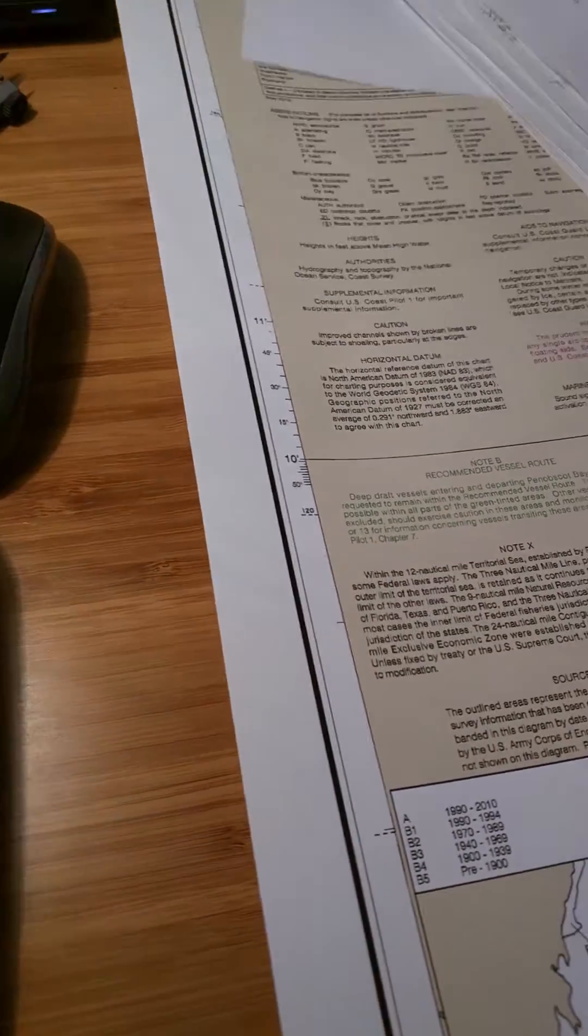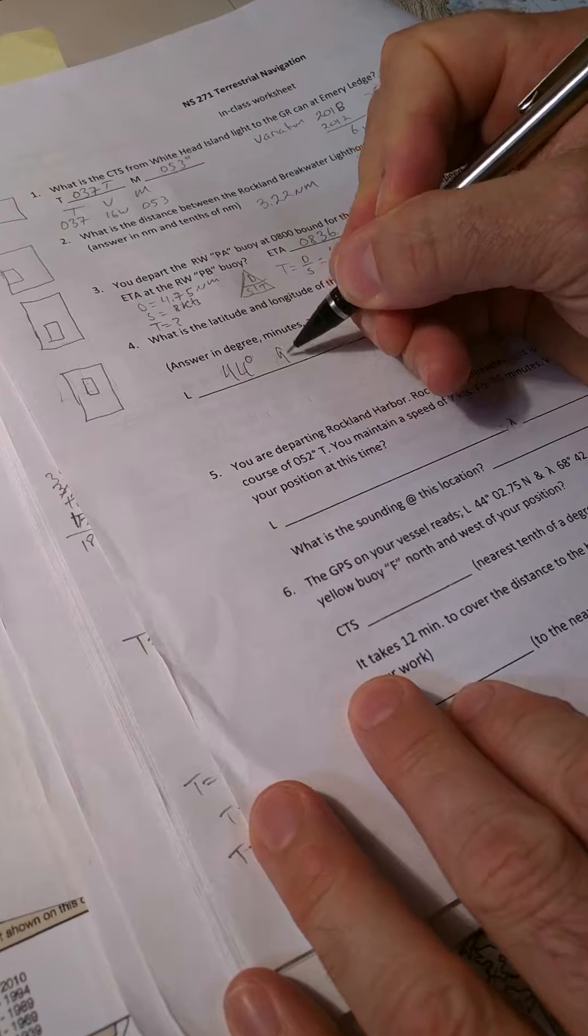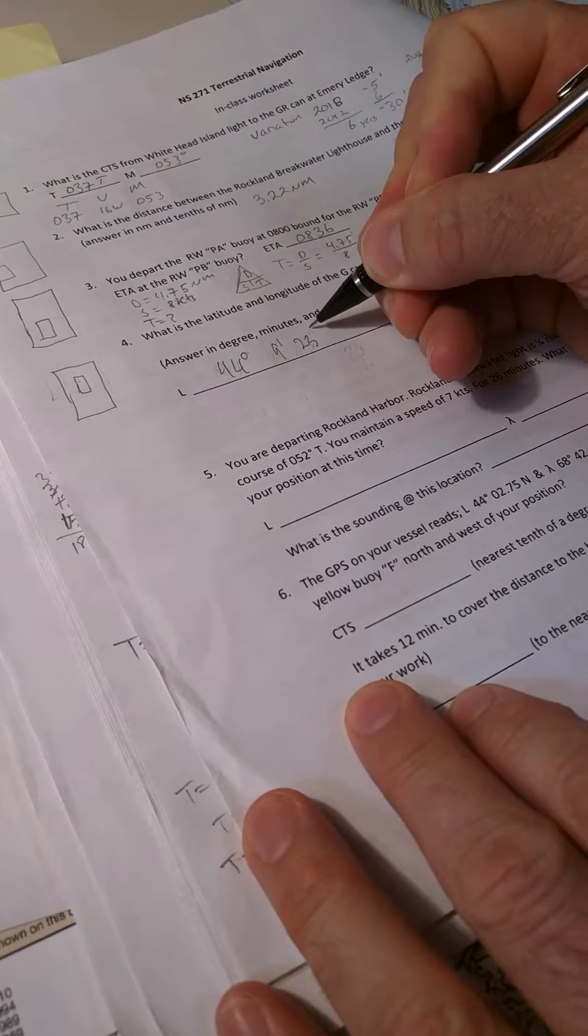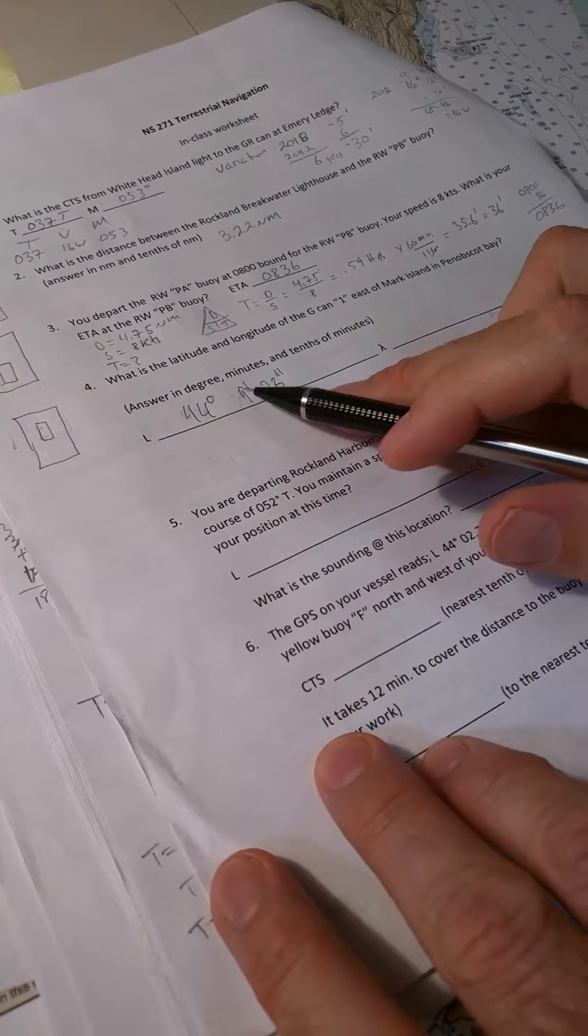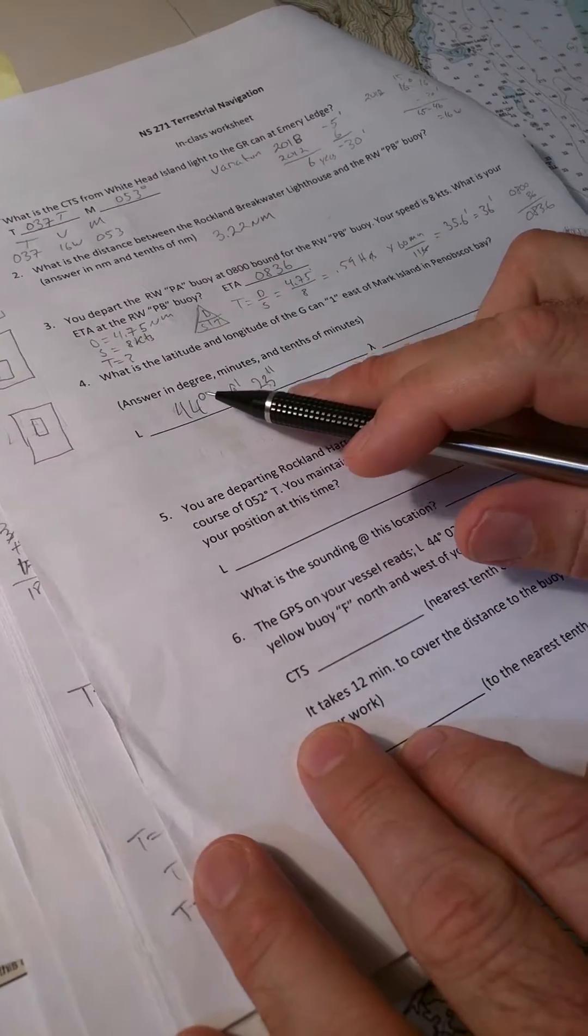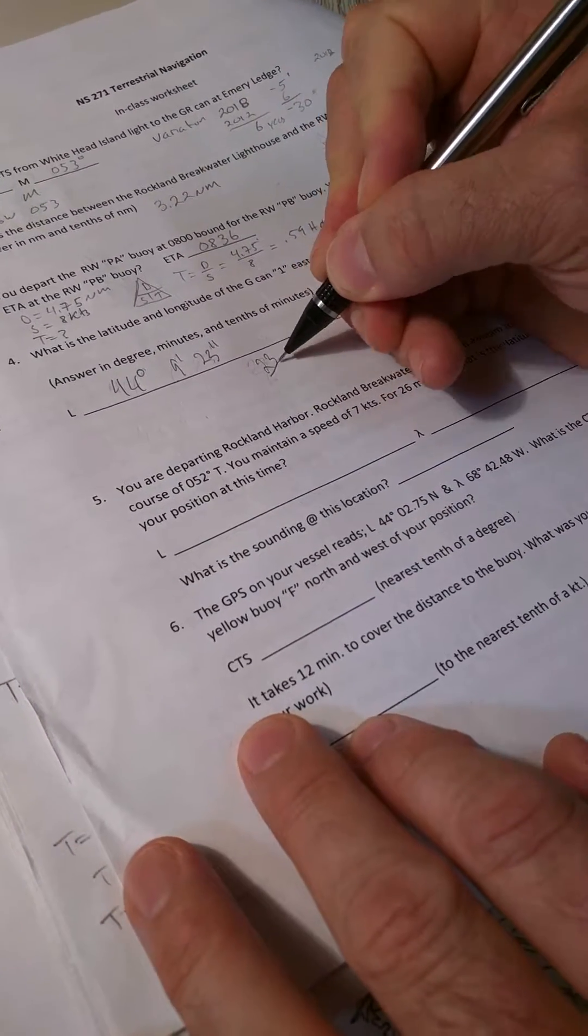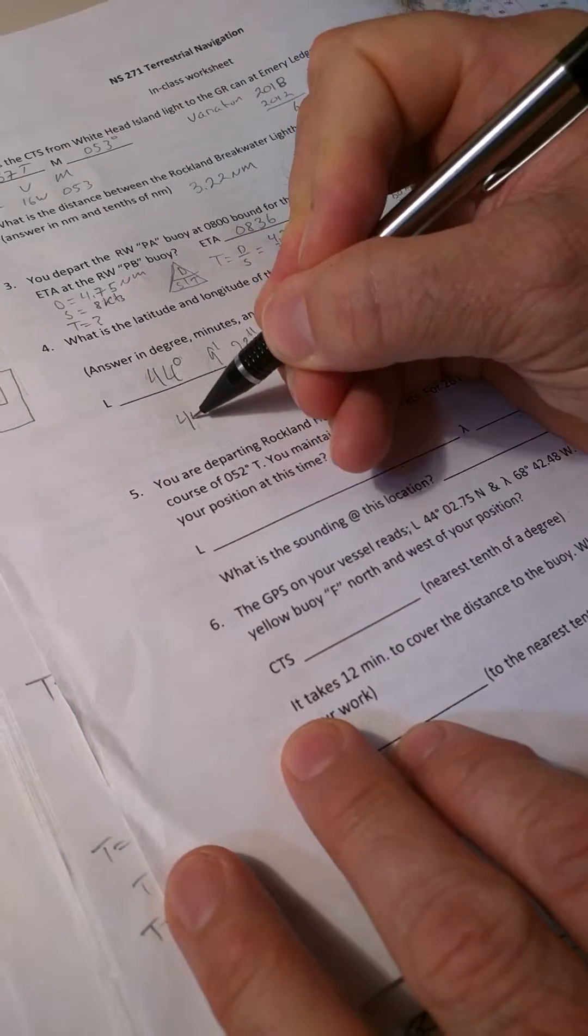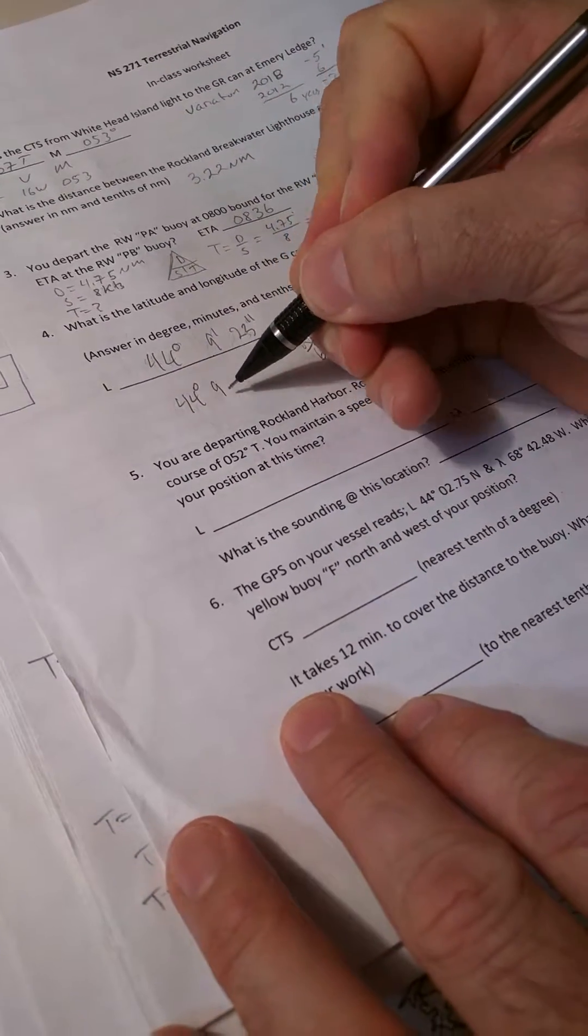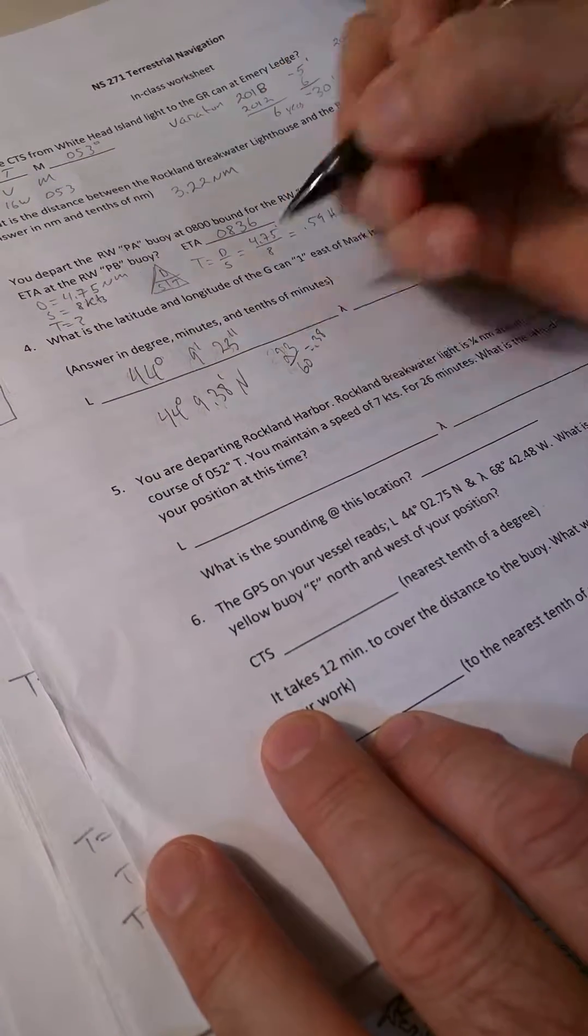So now we come up here. So 44 degrees, 9 minutes, 23 seconds. Now if I want to put that into, that's degrees, minutes, seconds, I could put it in degrees, minutes, decimal seconds. So I would just take 23 and divide it by 60, I get 0.38 when I do that. So that is 44 degrees, 9.38 minutes. That is north, that's the latitude.